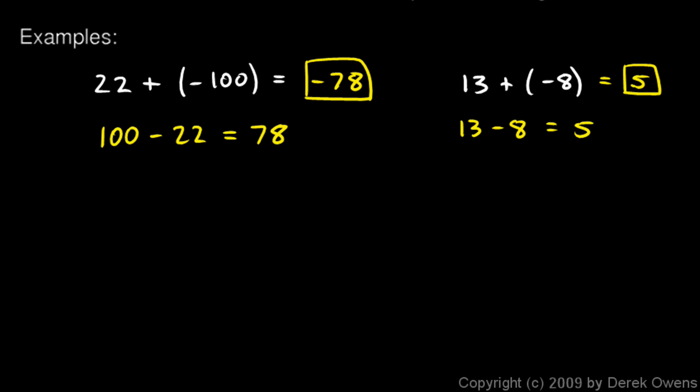Okay, another example, negative 39 plus 6. Well, again, we look at the absolute values of the numbers, 39 and 6, and we subtract the smaller from the larger. So the larger minus the smaller. 39 minus 6 is 33, and which of these is bigger, 39 or 6? Well, clearly, 39 is bigger, and the 39 is negative, so my result here has to be negative. This is 33 to the left, or 33 in the negative direction. So my answer is negative 33.